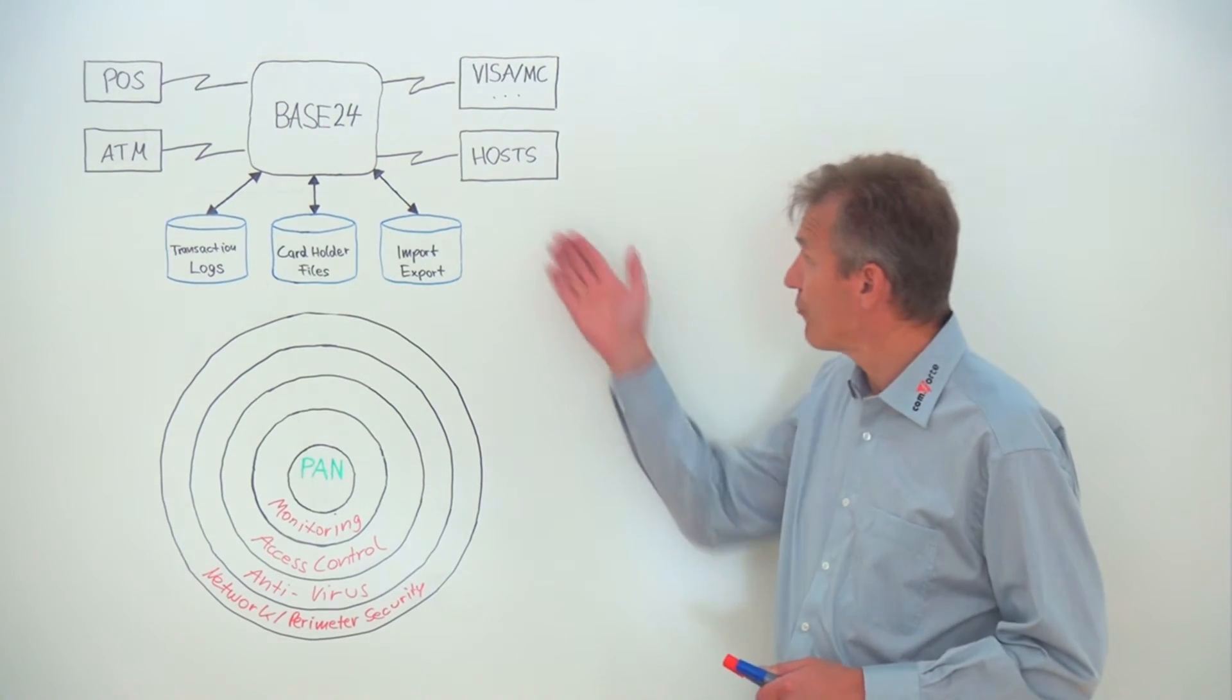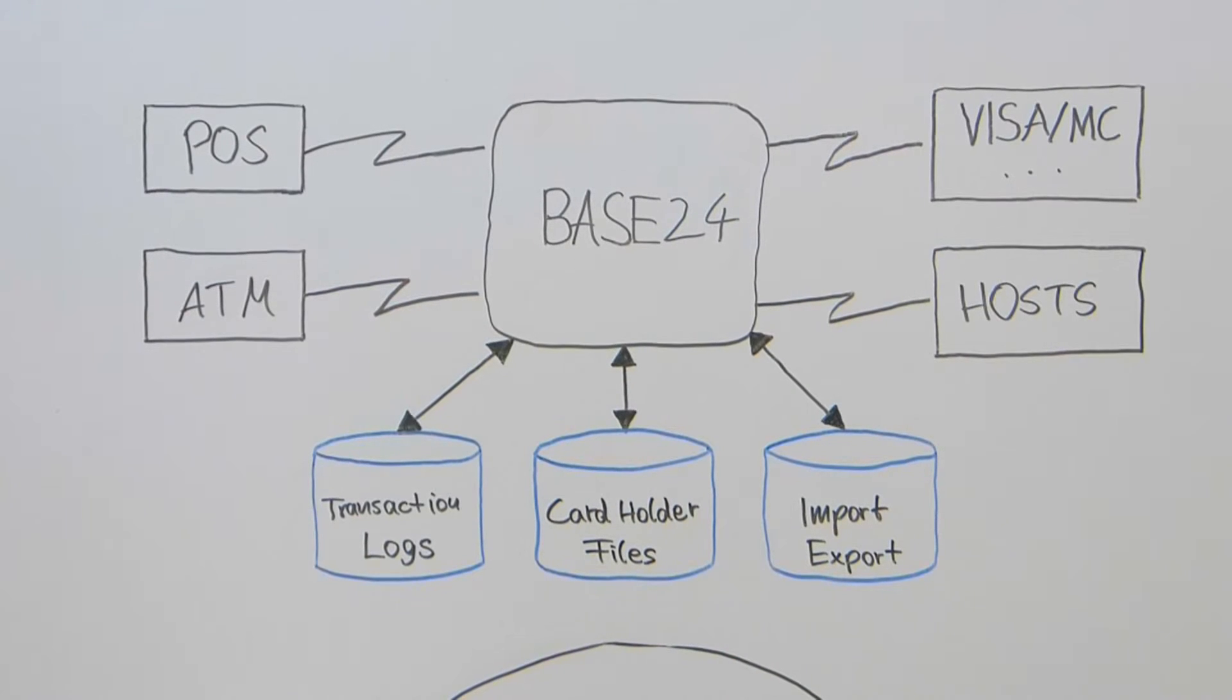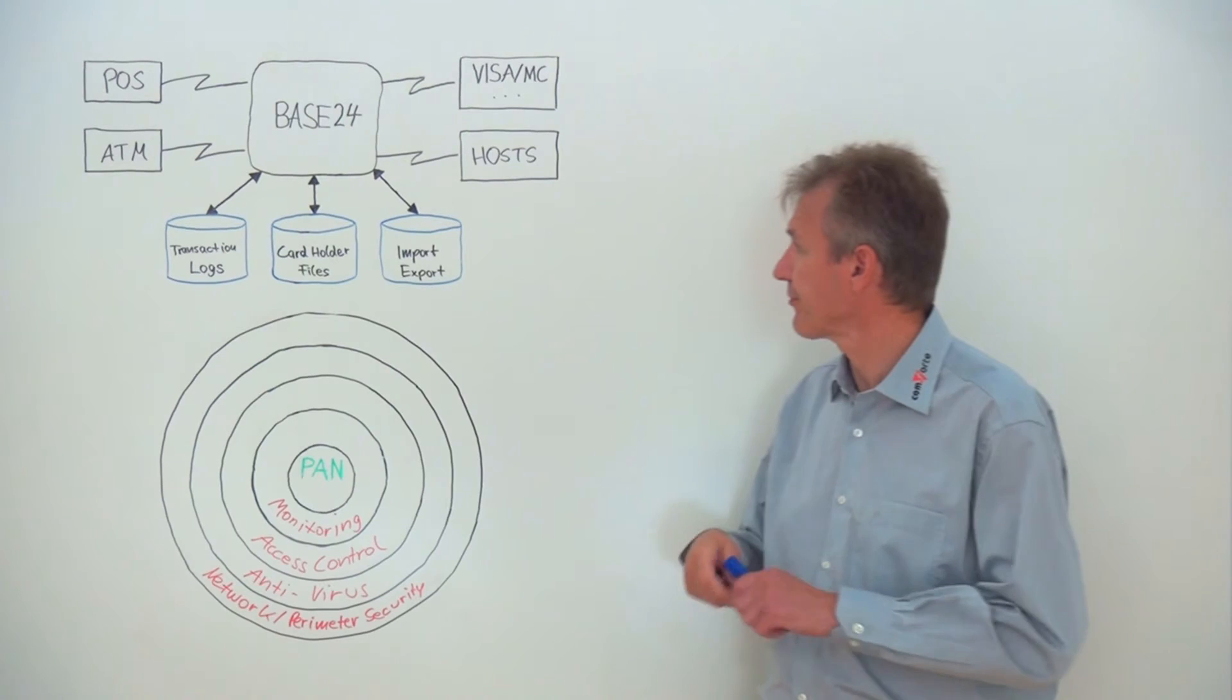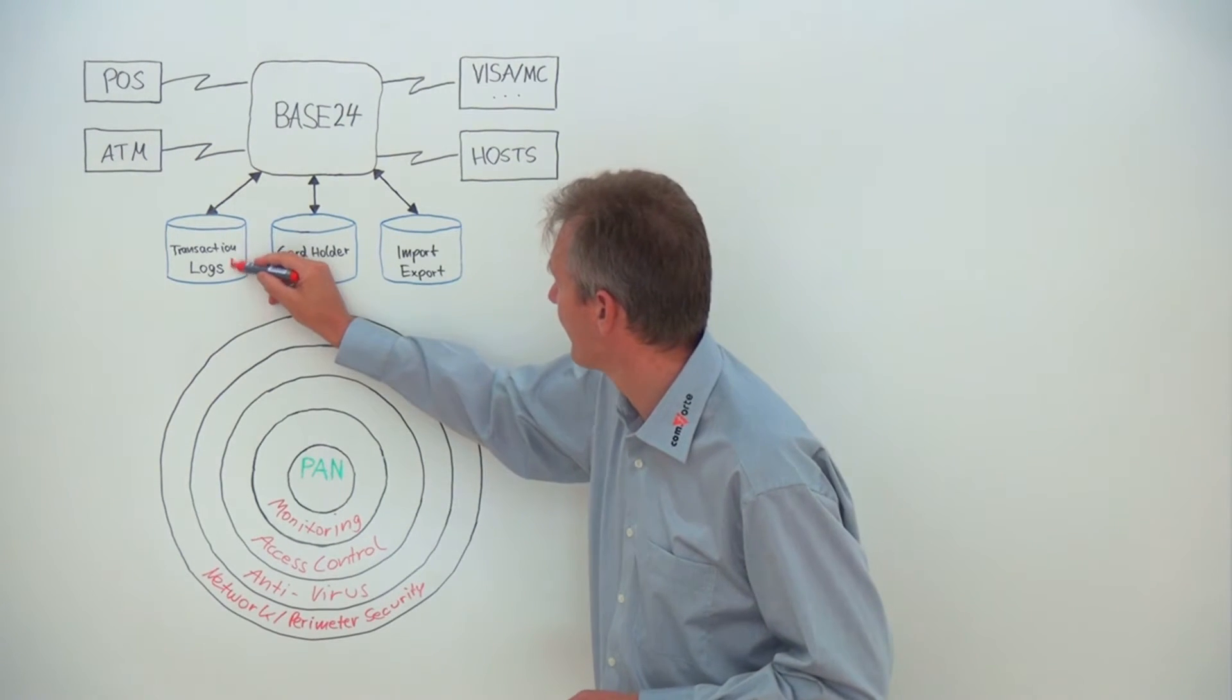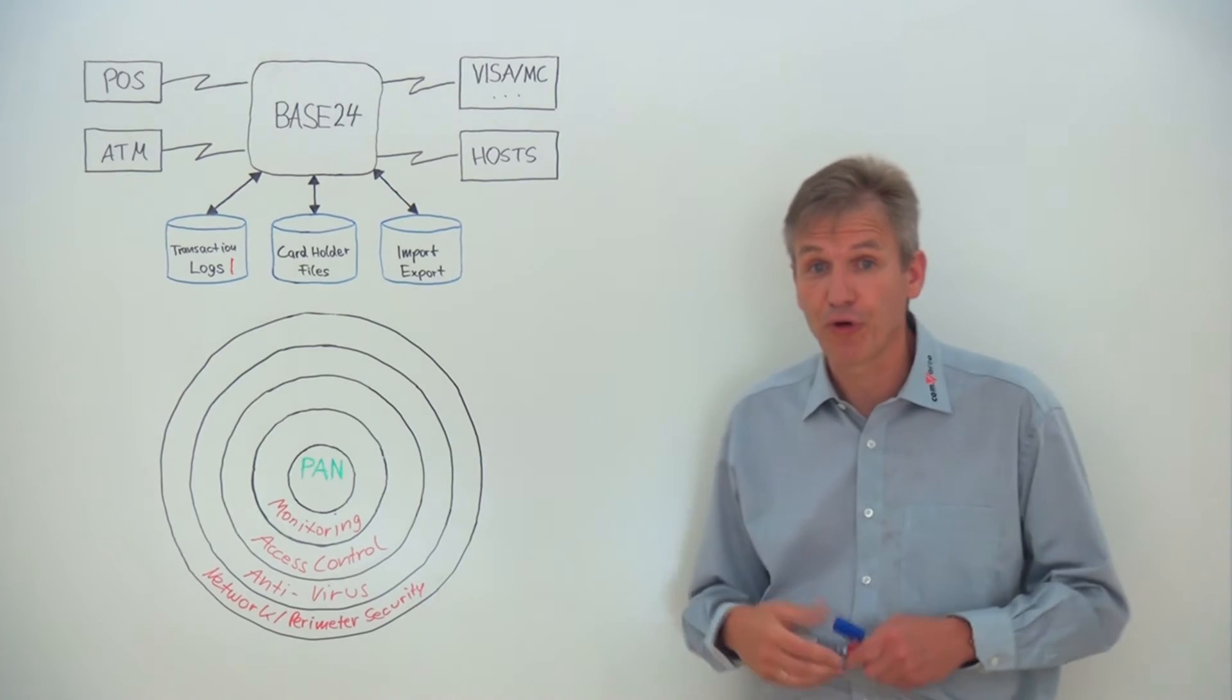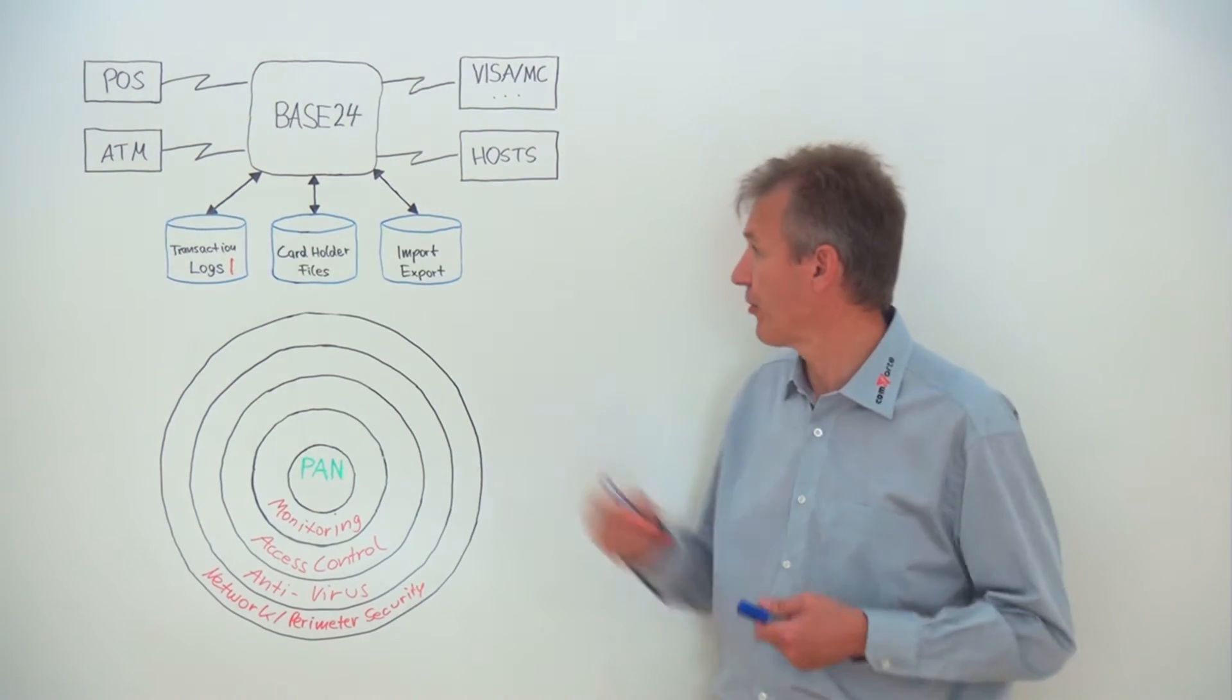Looking at this simplified picture of Base24, we can see where Base24 stores cardholder data. First of all, it stores transaction data in log files. Then it also stores a lot of PANs in cardholder data files.